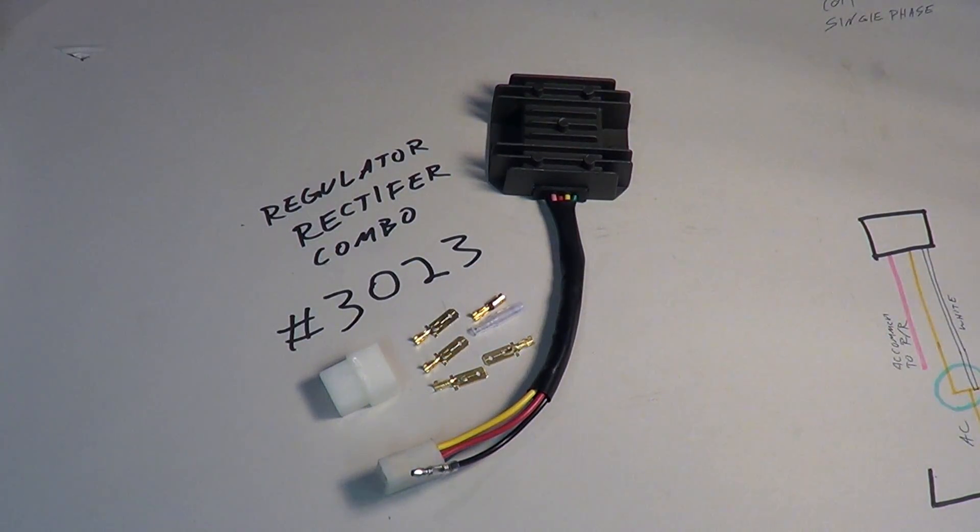Our regulator rectifier combo is CMC part number 3023. It comes with everything you see here, so the actual new unit and some connectors in case your wiring harness has been hacked up or you're making a custom wiring harness for your bike.